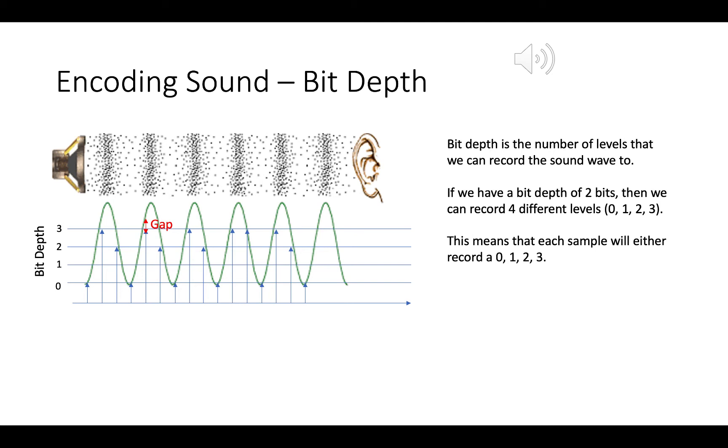Now, there are going to be lots of times when my sound wave is 3.1 or 2.9. But if I can only record it to the nearest whole number, so for instance, 2.9 becomes 3, that's going to introduce another gap. The difference between the actual sound wave amplitude and the nearest level is another cause of loss of quality of sound.